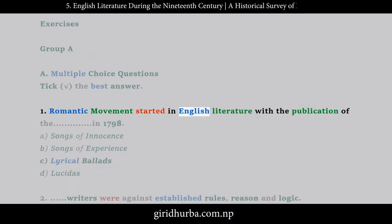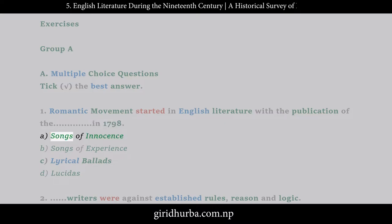Question 1: The Romantic movement started in English literature with the publication of the __ in 1798. A. Songs of Innocence, B. Songs of Experience, C. Lyrical Ballads, D. Luciders.